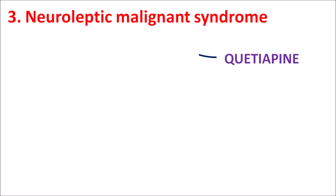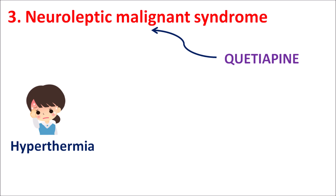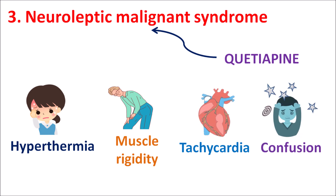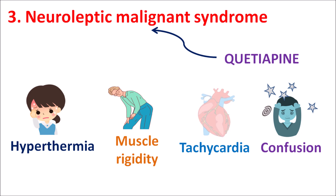The third precaution is neuroleptic malignant syndrome, which is commonly observed with many antipsychotics. Quetiapine can produce neuroleptic malignant syndrome resulting in symptoms such as excessive body temperature — hyperthermia — muscle rigidity and muscle spasm, increased heart rate resulting in tachycardia, and unexpected confusion. Any sudden increase in body temperature along with muscle spasm should be thoroughly monitored as it may indicate neuroleptic malignant syndrome. Even though it is a rare condition, it is a serious one involving excessive elevation of body temperature.